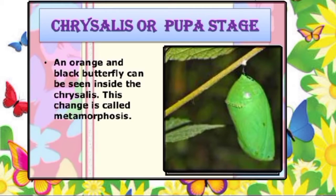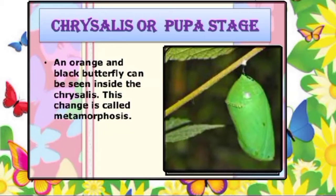The next stage is the pupa stage. The caterpillar makes a silk mat and attaches itself at the base. It also spins a string of silk around its body and attaches the string to a branch to hold the pupa in place. The majority of butterflies will hang upside down from the silk pad.